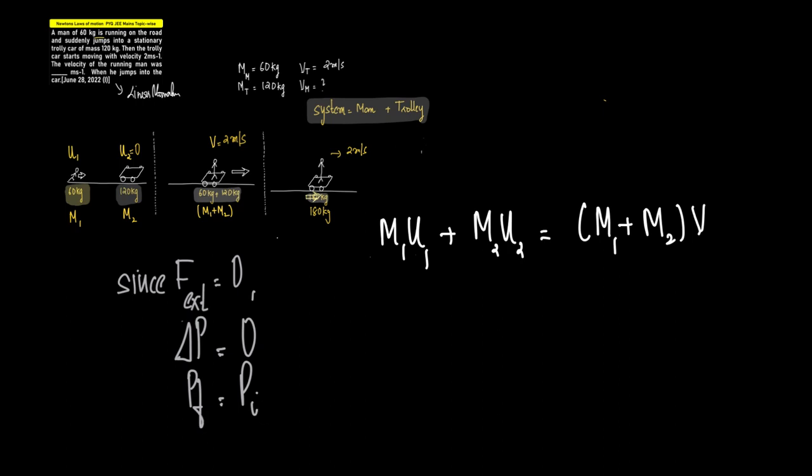What is the final momentum? Final momentum means after this condition, so the final momentum means mass into final velocity. What is the final velocity? 2 meters per second. What is the final mass? It is m1 plus m2. This represents the final momentum and this represents the initial momentum. This represents the initial conditions and this part represents the final condition.